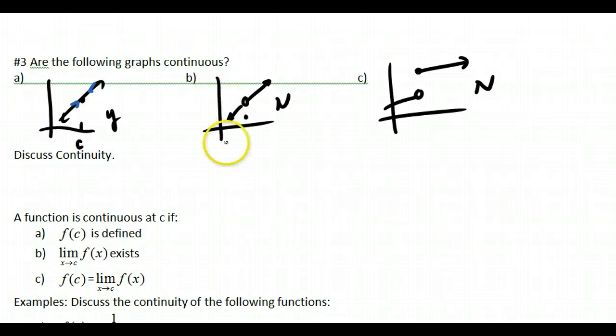Then the third condition is that both of those are equal to each other. So if I look at part b, condition a is satisfied. And condition b is satisfied because they do have a limit. But they are not equal to each other. So then this portion fails for this problem.